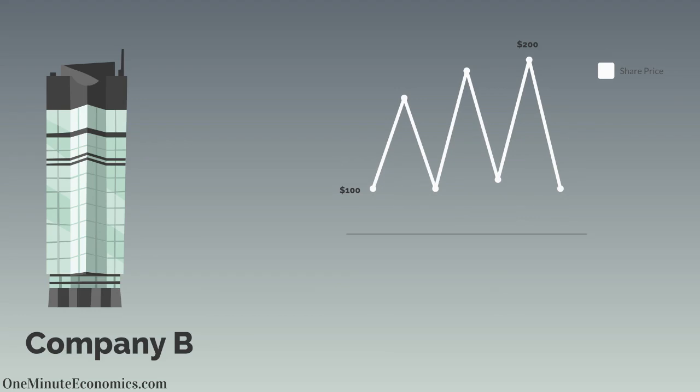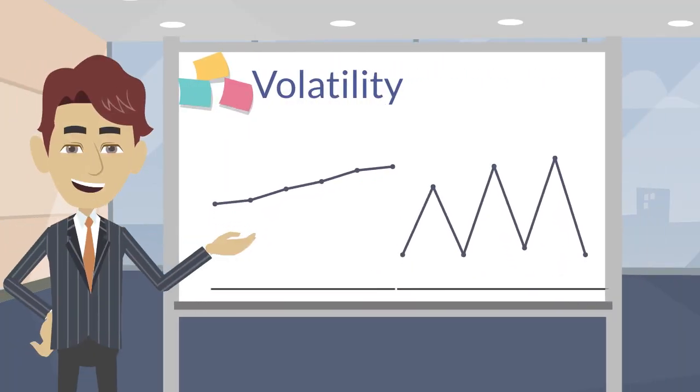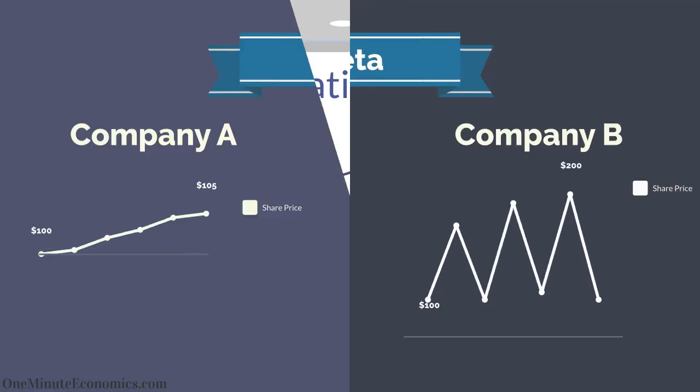Volatility simply tells us that an asset or asset class is likely to have wilder or less wild price swings. It doesn't show us a direction. We can use metrics such as beta to historically compare Company A or B volatility to that of the entire stock market.